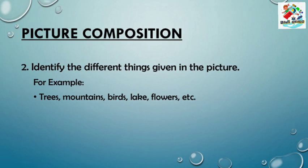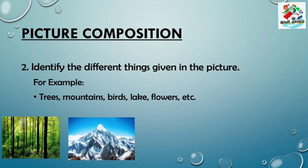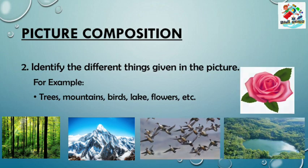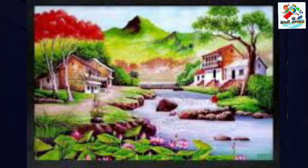For example: trees, mountains, birds, lake, flowers, etc. To make it more clear, let us discuss about this picture. See this picture — lush green mountains are looking so beautiful, huge trees are there near the houses, pretty lotus are floating in the lake. Now you understand how to describe the given things in the picture by observing it carefully.